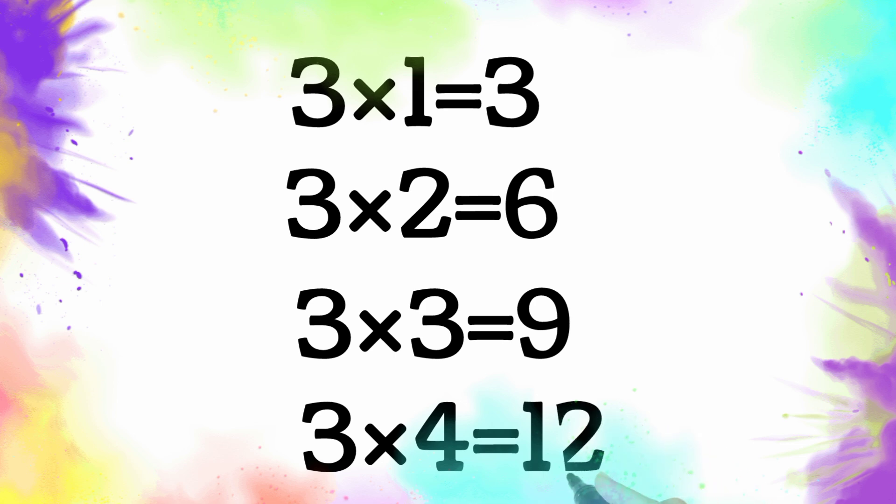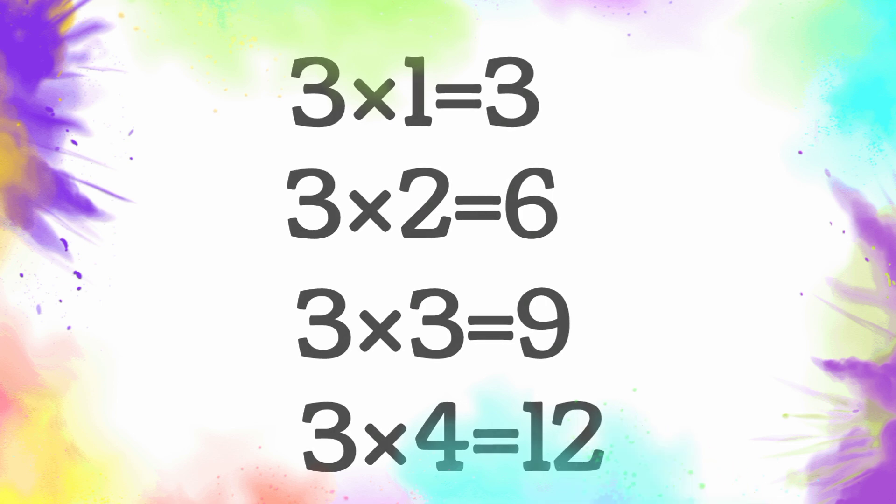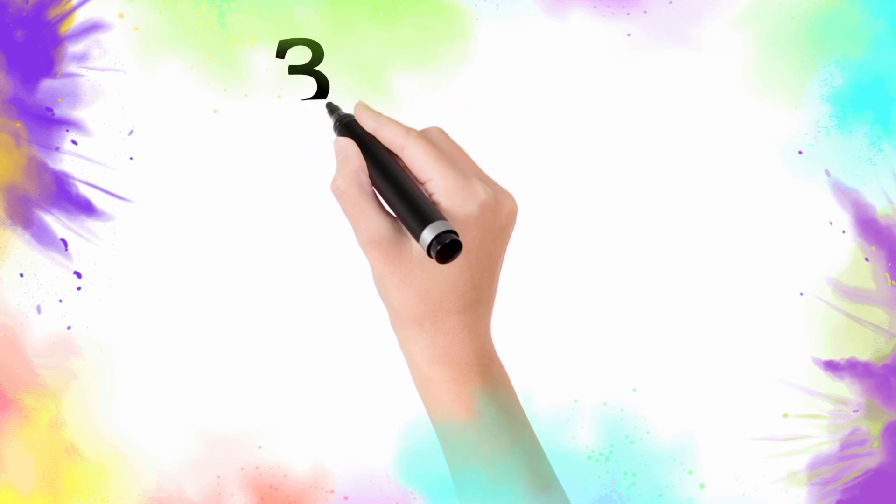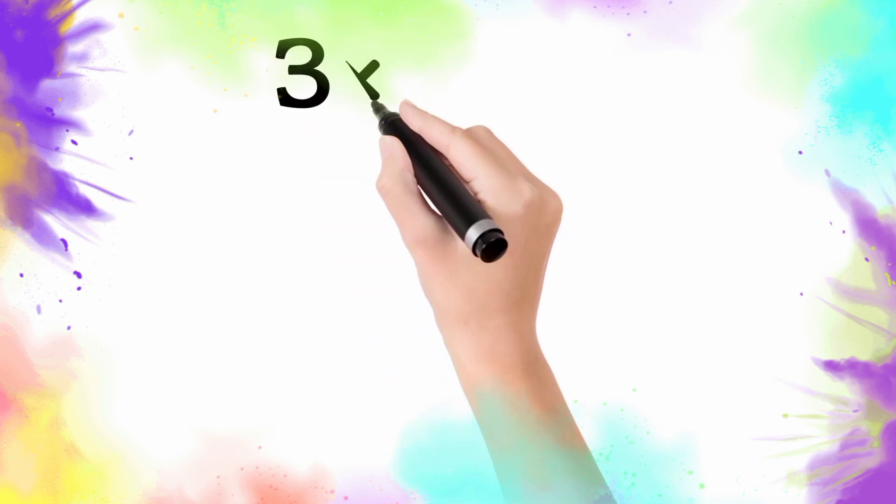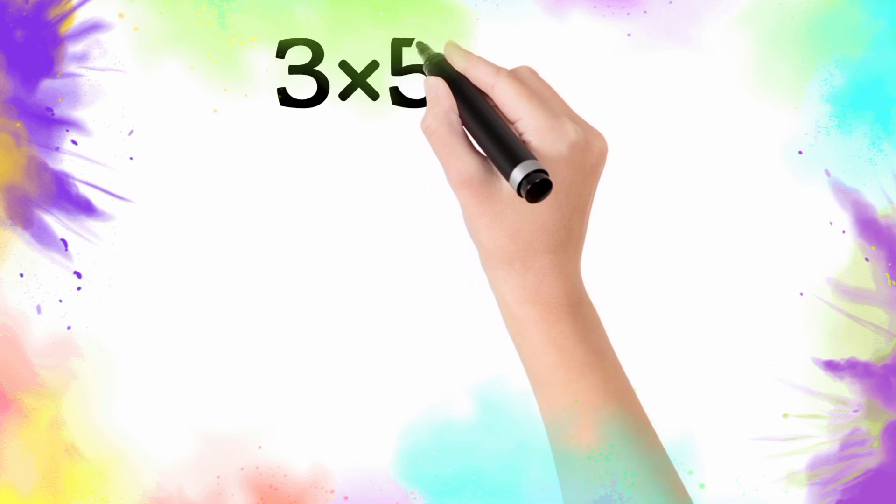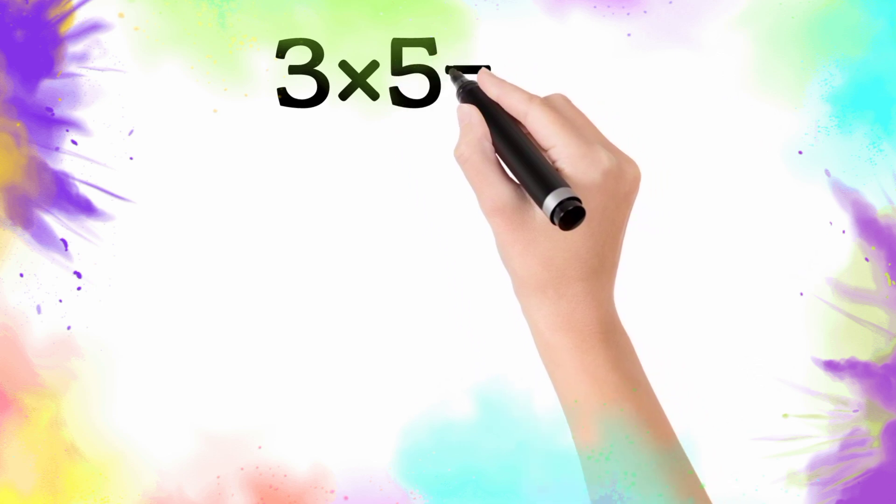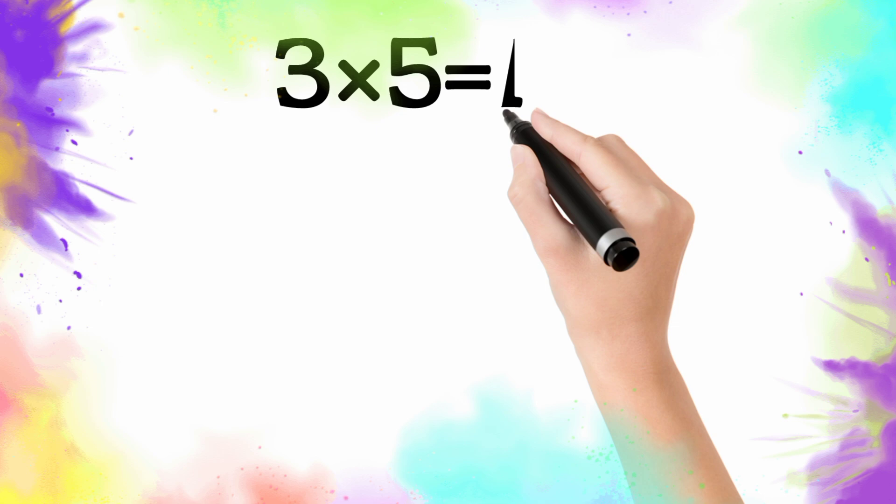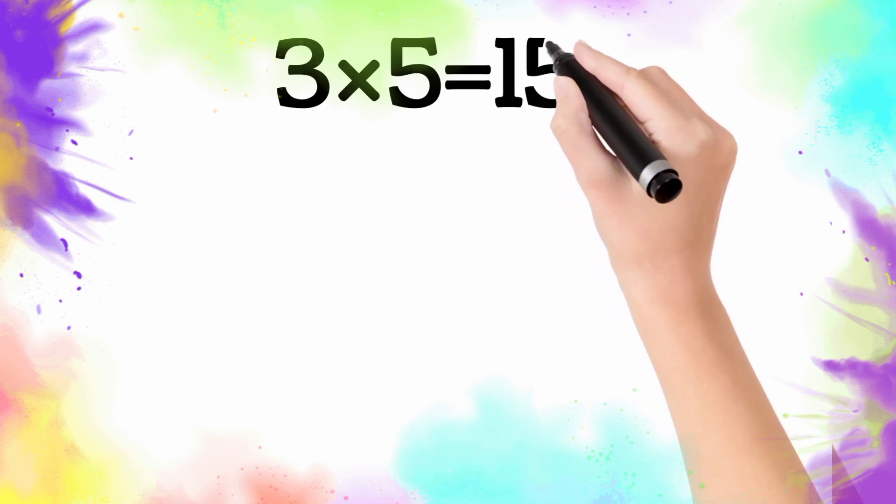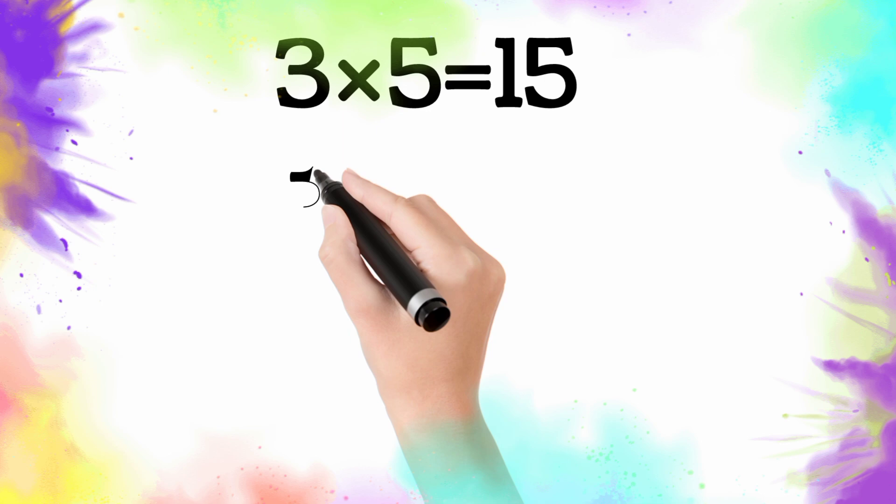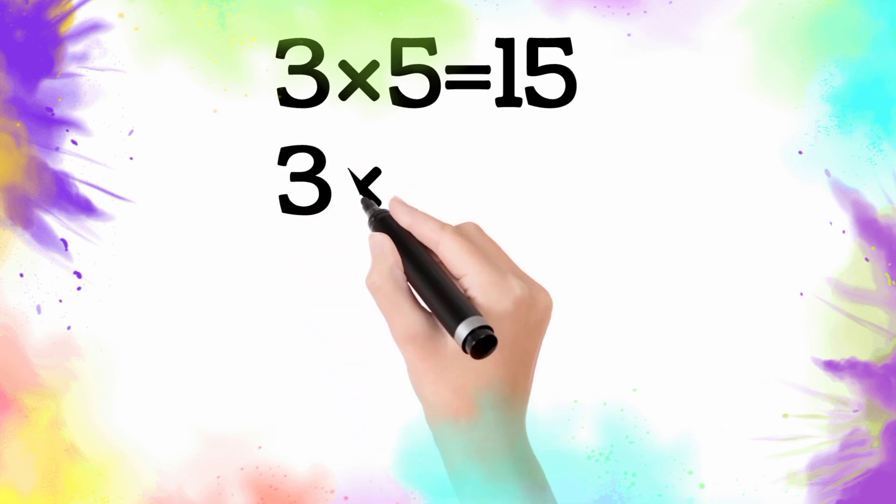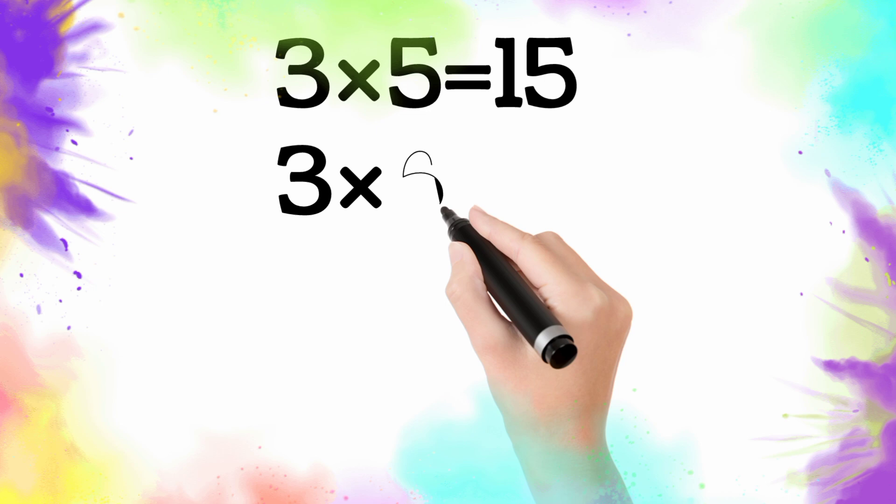Three four, the twelve. Three multiply by five is equal fifteen. So three five, the fifteen. Three multiply by six.